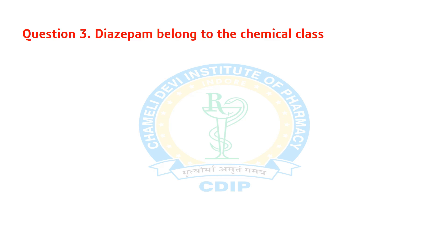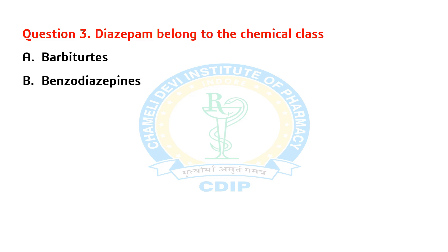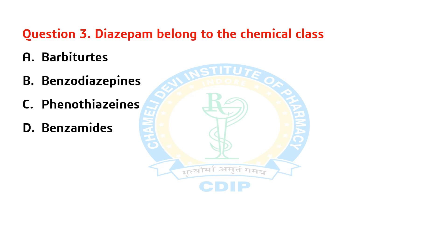Question 3. Diazepam belongs to which chemical class? A) Barbiturates. B) Benzodiazepines. C) Phenothiazines. D) Benzamides. Answer: B. Benzodiazepines.